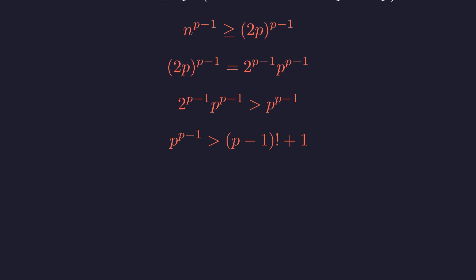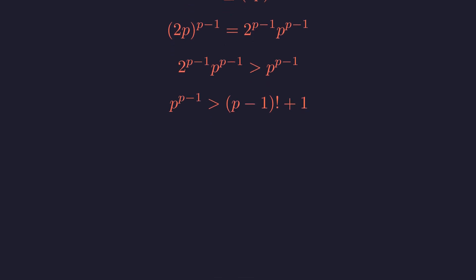And we just proved in our first case that this is larger than the right side of our equation. Chaining these inequalities together proves that for any p equal to 3 or more, the left side of the equation is always strictly greater than the right side. No solutions can exist.